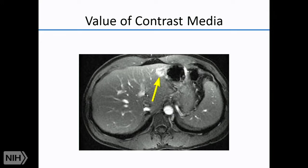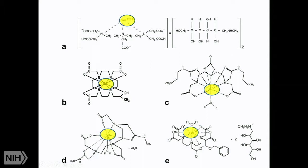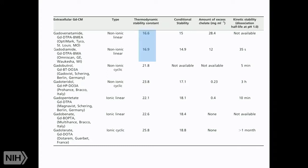MRI also has a contrast agent — gadolinium instead of iodine — and it's extremely useful. Gadolinium is a metal that needs to be chelated; different chelates have different strengths. Some are stronger and will retain the gadolinium inside the molecule — important because free gadolinium ion will get into the bones, liver, and other organs and cause trouble, whereas chelated gadolinium will simply be excreted.